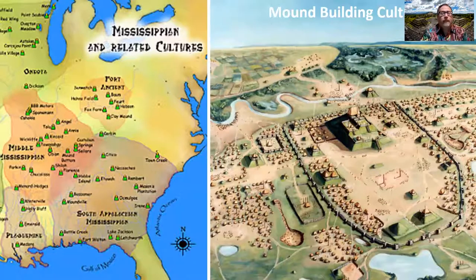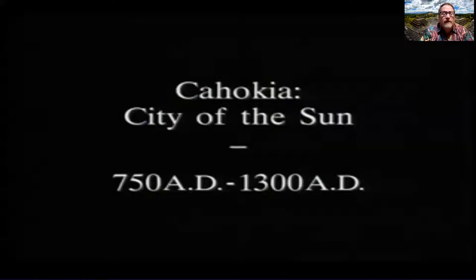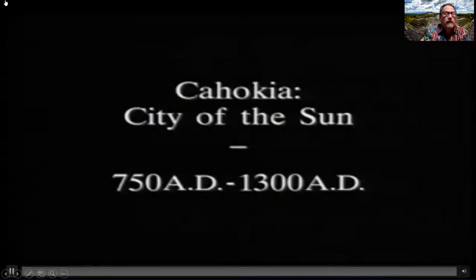We have another culture that develops in the eastern woodlands mounds area — the Mississippian culture. This is Cahokia, which means 'city of the sun,' and it goes from 750 CE to about 1300 CE. It was the largest city in all of North America until Philadelphia when the United States became a country in 1776.